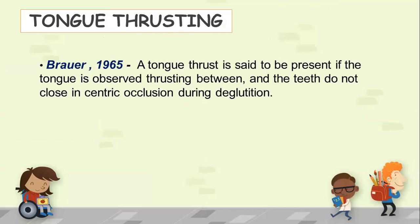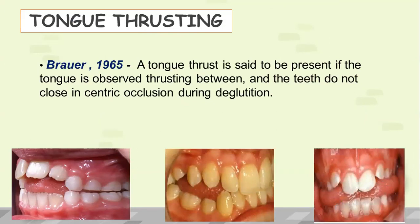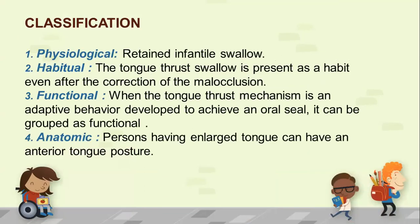The next habit is tongue thrusting. Tongue thrust is said to be present if the tongue is observed thrusting between the teeth and they do not close in centric occlusion during deglutition. This definition was given by Brauer in the year 1965. Tongue thrusting can be classified into physiological, habitual, functional, and anatomic. Physiological tongue thrusting is when there is a retained infant swallow. Habitual is when it is present as a habit even after the correction of malocclusion. Functional is when the tongue thrust mechanism is an adaptive behavior developed to achieve an oral seal. Anatomic tongue thrusting occurs in persons having an enlarged tongue, causing them to automatically thrust between the teeth with an anterior tongue posture.